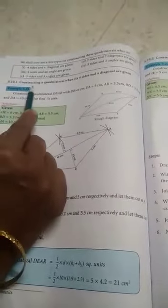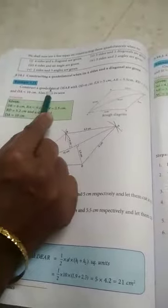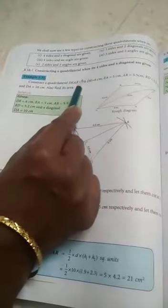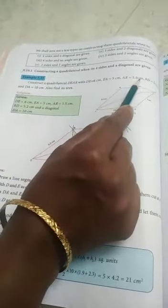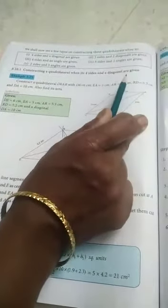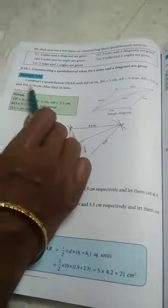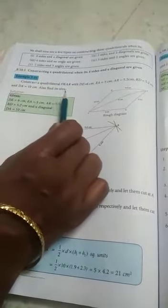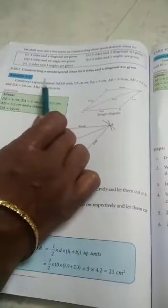Example 5.21: Construct a quadrilateral DEAR with DE 6 cm, EA 5 cm, AR 5.5 cm, RD 5.2 cm, and DA 10 cm. Also find its area. So quadrilateral draw and area find it. Take one notebook. Solution: write the given measurement, draw the rough diagram. Now you can draw, take a scale.